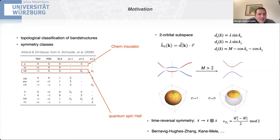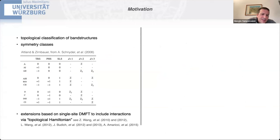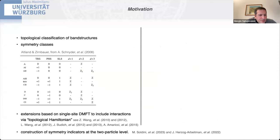If I add time reversal symmetry and consider two copies I have a quantum spin-Hall insulator, and this transition can be obtained only by closing and reopening the gap. This classification gives us information about metallic boundary states. Including interactions in this picture has been done in single-site MFT in the framework of the so-called topological Hamiltonian, which is limited by the fact that the self-energy is k-independent. There have also been more sophisticated constructions based on two-particle symmetry indicators, which are quite complicated to handle.